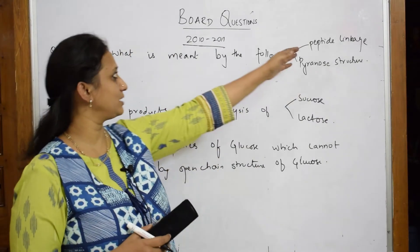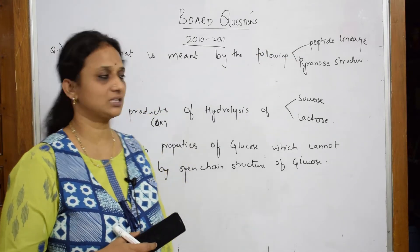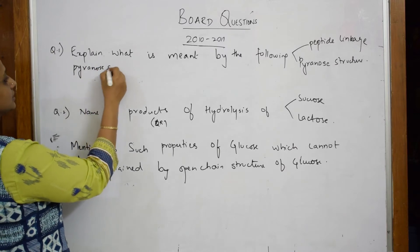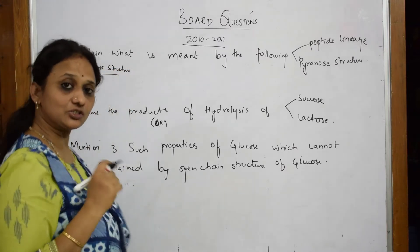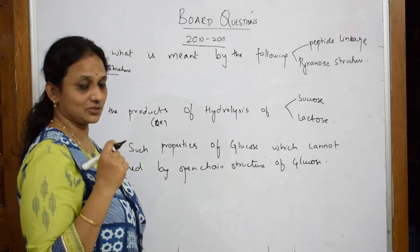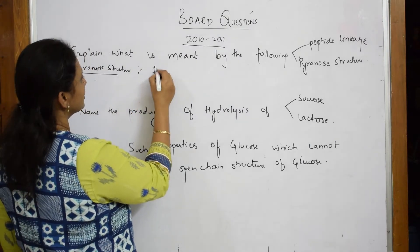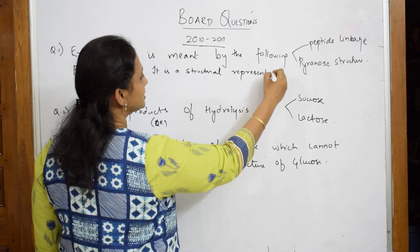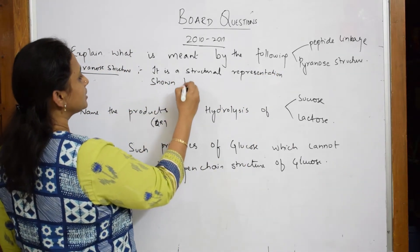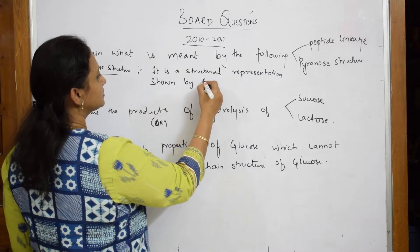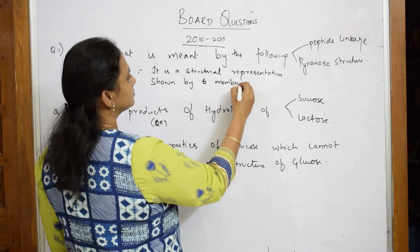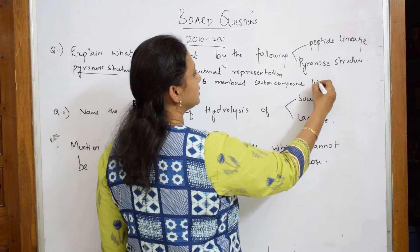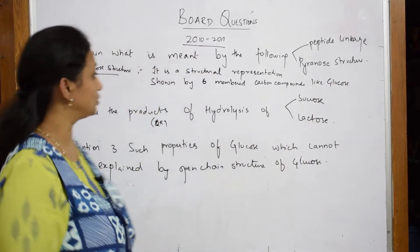What is meant by pyranose structure? I've done this in a previous paper. When you hear 'pyranose structure,' your first thought should go to the structure of glucose. Pyranose structure is a cyclic structure — it is a structural representation shown by six-membered carbon compounds, like glucose.